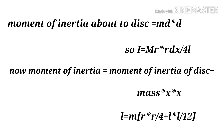The moment of inertia of the whole cylinder equals the moment of inertia of the disk into mass into diameter squared. So I equals M r squared by 4 plus r squared by 12, where small m is the mass per unit length, r is the radius, and l is the length.